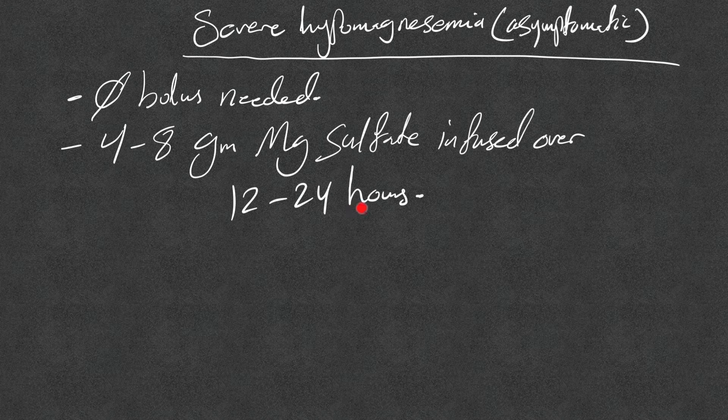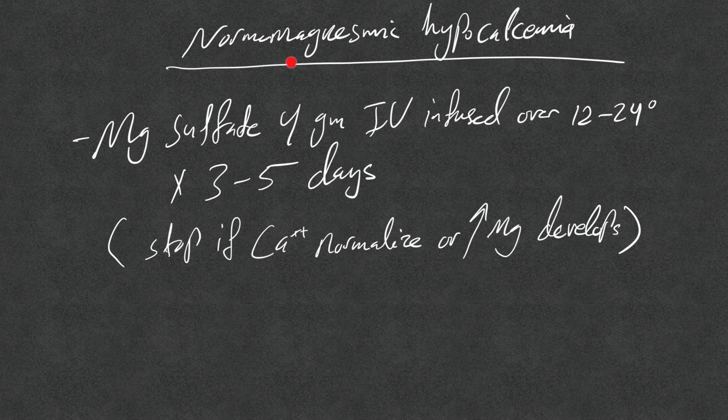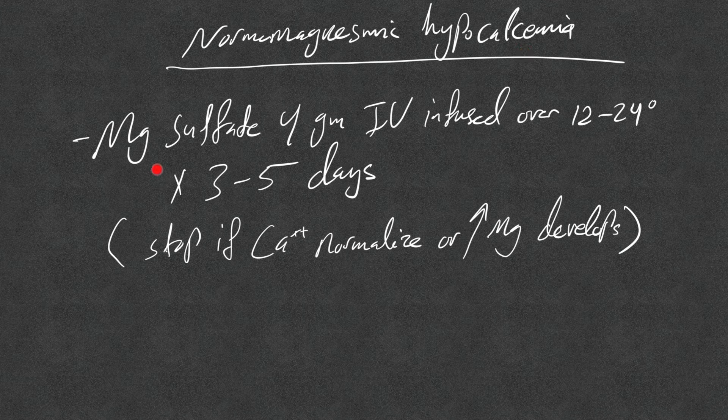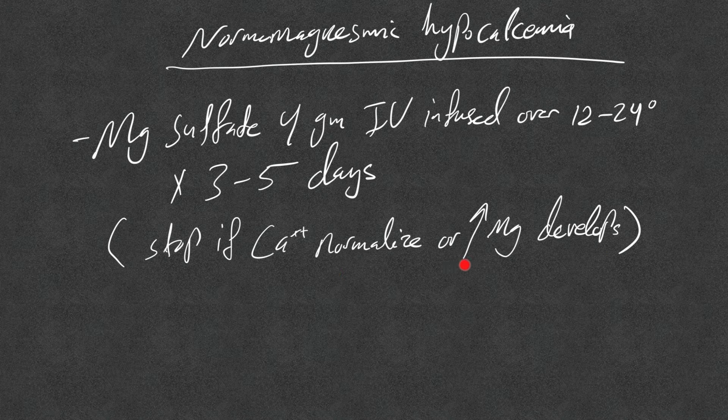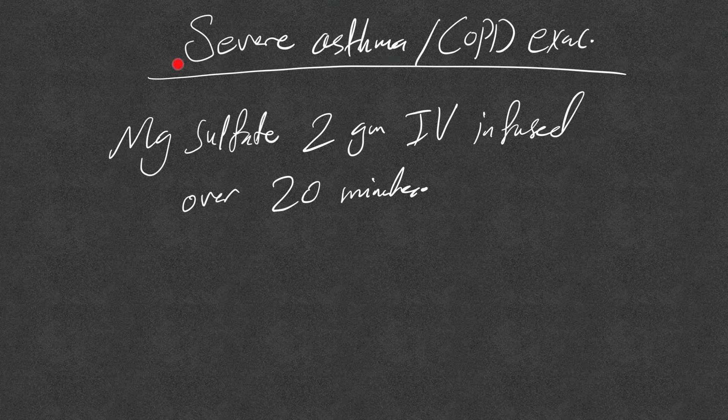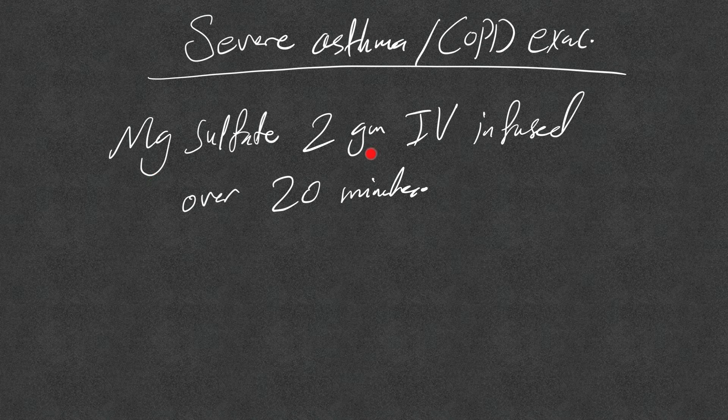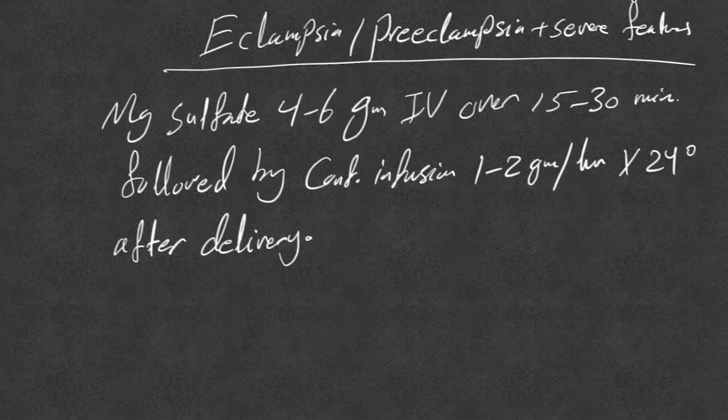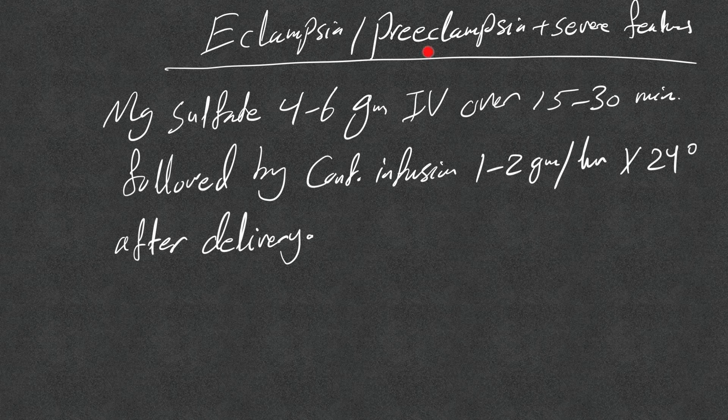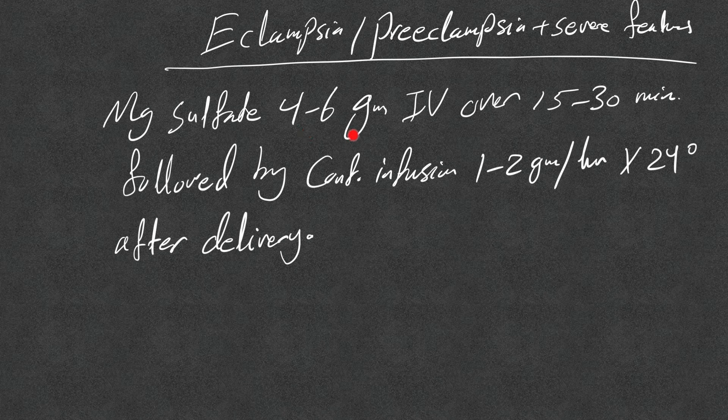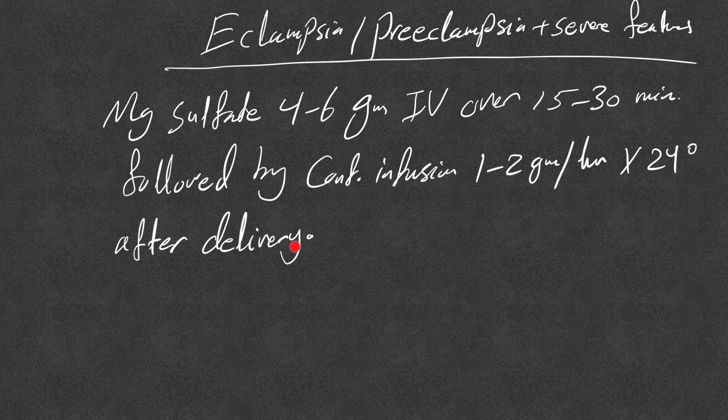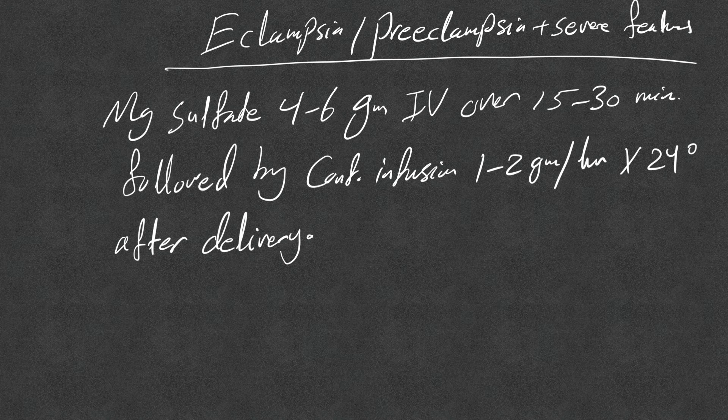For normal magnesemic hypocalcemia, we give magnesium sulfate 4 grams IV infused over 12 to 24 hours slowly for 3 to 5 days, and we stop once the calcium level is normalized or hypermagnesemia develops. For severe asthma and COPD exacerbation, remember IV magnesium can be given here to help. We give 2 grams IV of magnesium sulfate infused over 20 minutes. Remember, magnesium, IV magnesium, is given in eclampsia and pre-eclampsia with severe features. Magnesium sulfate 4 to 6 grams IV over 15 to 30 minutes, followed by continuous infusion of 1 to 2 grams every hour times 24 hours after delivery. You need to monitor magnesium level and signs of hypermagnesemia closely.